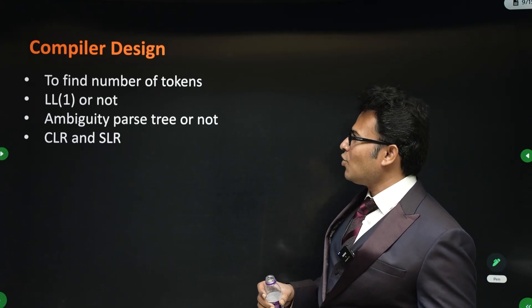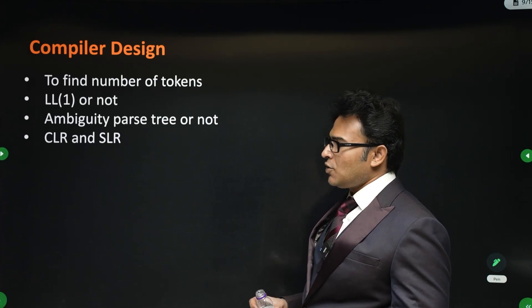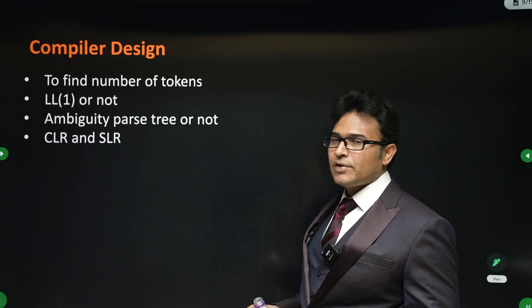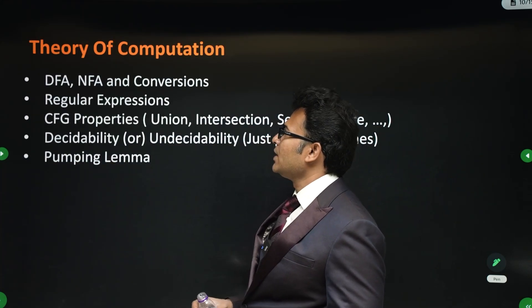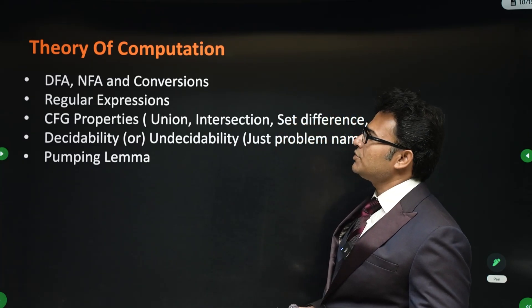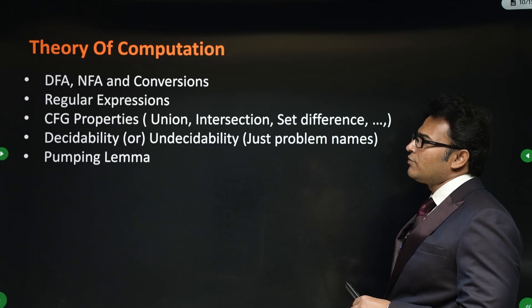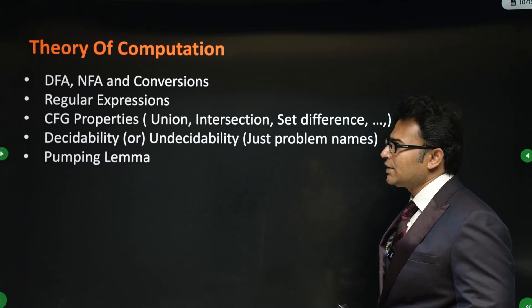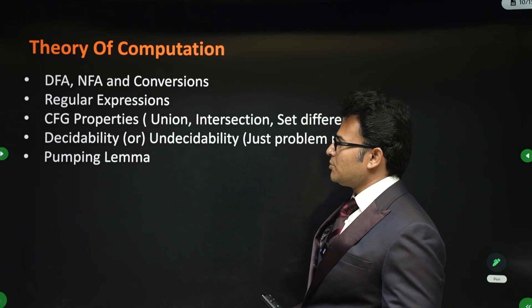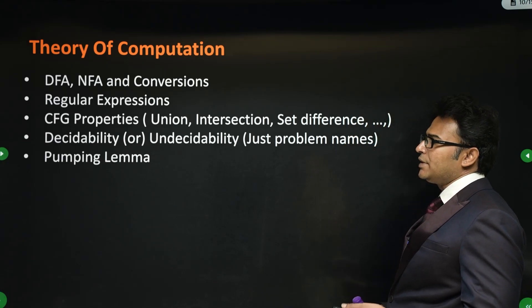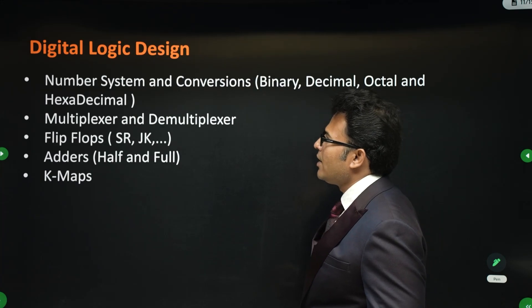Compiler design is a relatively simple subject. Focus on how to find the number of tokens, whether a grammar is LL(1) or not, ambiguity of a grammar, and CLR and SLR parsing. For TOC, which is a very scoring subject, focus on DFA, NFA, and conversions, regular expressions, context-free grammar properties, decidability and undecidability, and pumping lemma for regular and context-free languages.